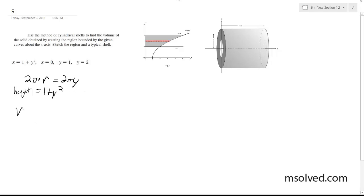And then setting this up so the volumes can be equal to, from 1 to 2, because that's our constraint, one of our constraints. So 2 pi y times 1 plus y squared dy.